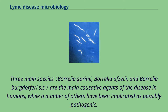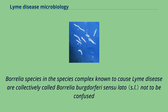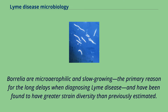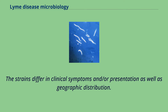Three main species are the main causative agents of the disease in humans, while a number of others have been implicated as possibly pathogenic. Borrelia species and the species complex known to cause Lyme disease are collectively called Borrelia burgdorferi sensu lato, not to be confused with the single species Borrelia burgdorferi sensu stricto, which is responsible for nearly all cases of Lyme disease in North America. Borrelia are microaerophilic and slow-growing, the primary reason for the long delays when diagnosing Lyme disease, and have been found to have greater strain diversity than previously estimated.